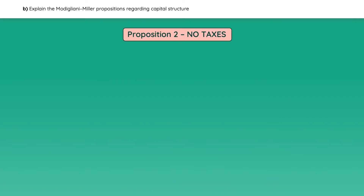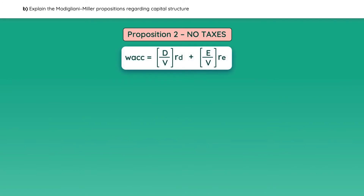Under this proposition, the firm's weighted average cost of capital is equal to the weight of debt times the cost of debt, plus the weight of equity times the cost of equity. Notice that the value can be found by adding total debt and total equity.